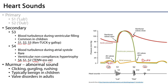A murmur can be anything else that isn't typical — a clicking sound, a gurgling sound, a whooshing or rushing sound. Generally, but not always, murmurs tend to be quite benign in children, and if caught in adults can be indicative of valvular disorders. They could be benign or not, but it's important that a murmur is fully evaluated to make that determination by the physician.